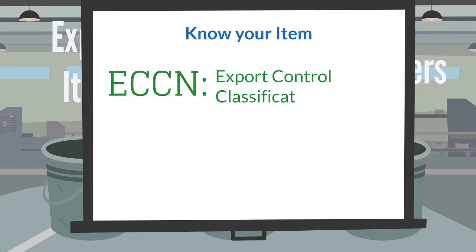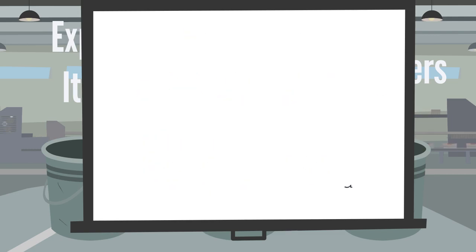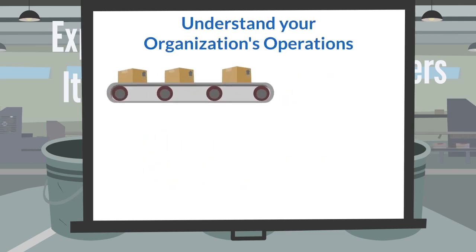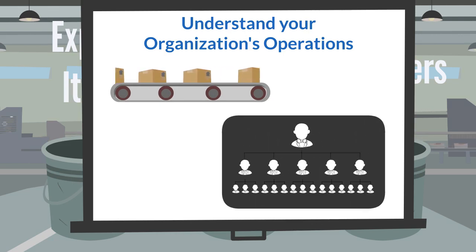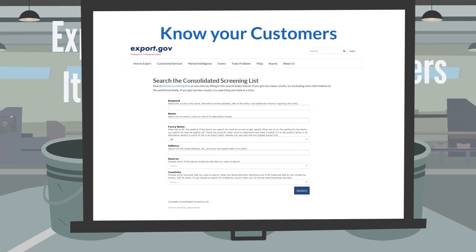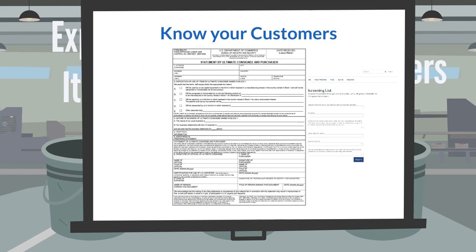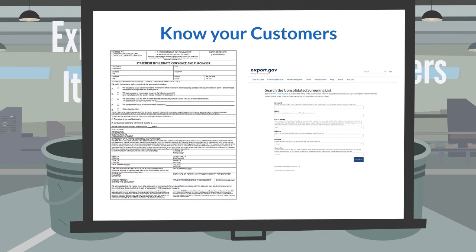Your ECCN is important because it is used to determine BIS export licensing requirements. A company needs to know its exporting procedures and processes very well, and personnel need to be well trained in those procedures to minimize risk. It's important to know your customers. Screening your customers against the consolidated screening list and requesting an end-use statement can help mitigate your company's exporting risk. A screenshot of the consolidated screening list and the BIS 7-11 form — a statement by ultimate consignee and purchaser — appear on the screen.